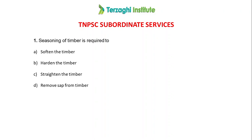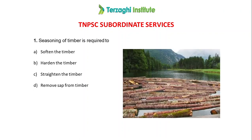The first question is on seasoning of timber. There are 4 options: Soften, Harden, Straighten, and Remove Sap. The reason for seasoning is removing the moisture from the wood. So the answer is Option D — Remove the sap from the timber.